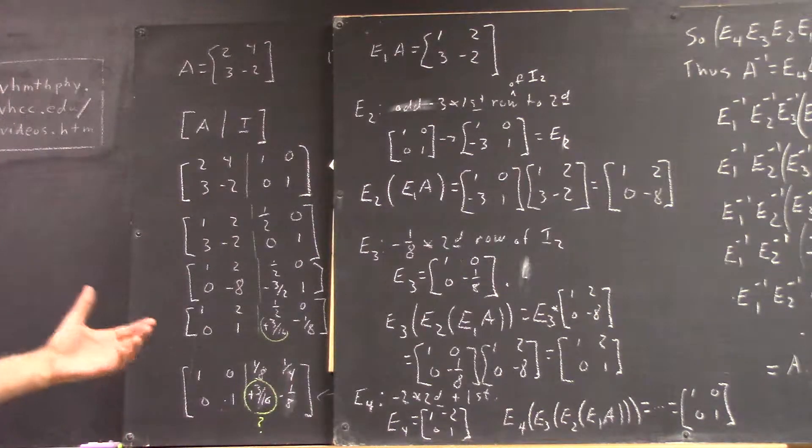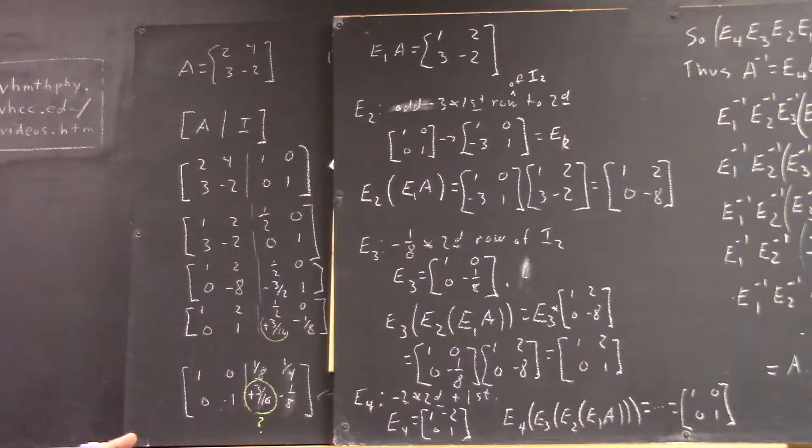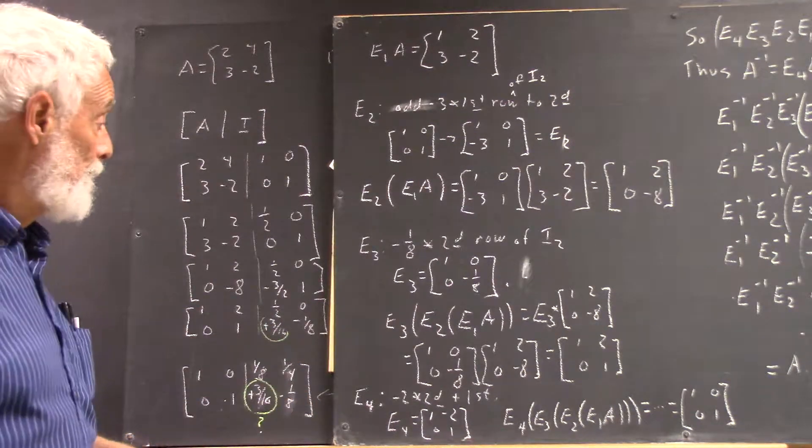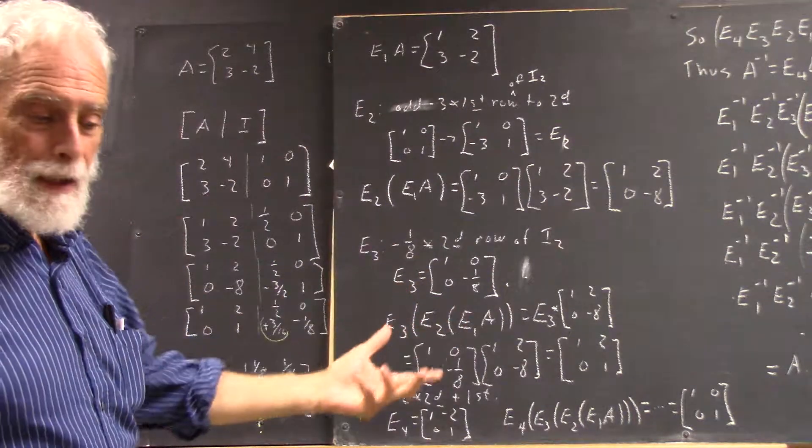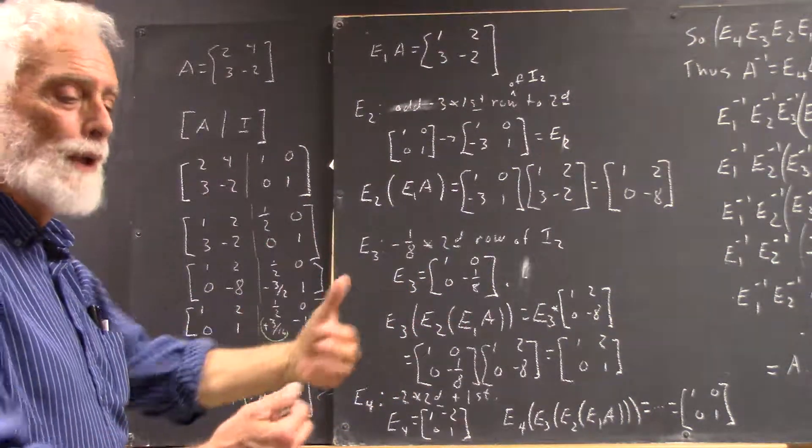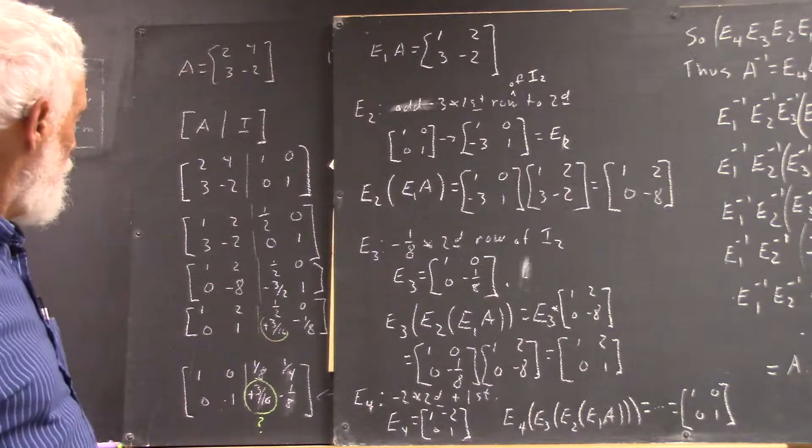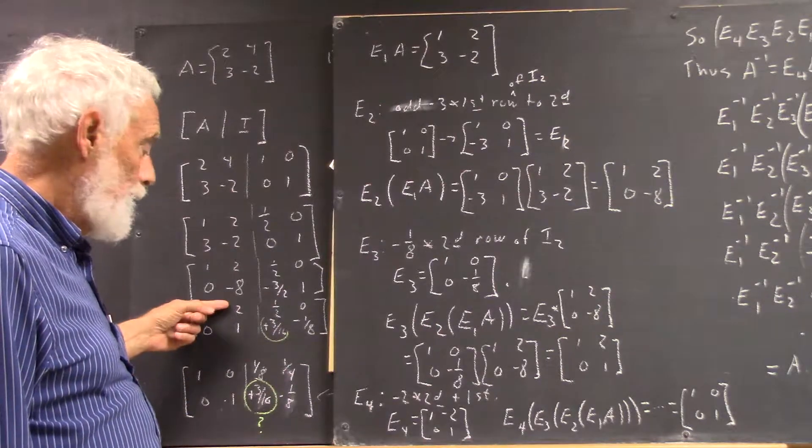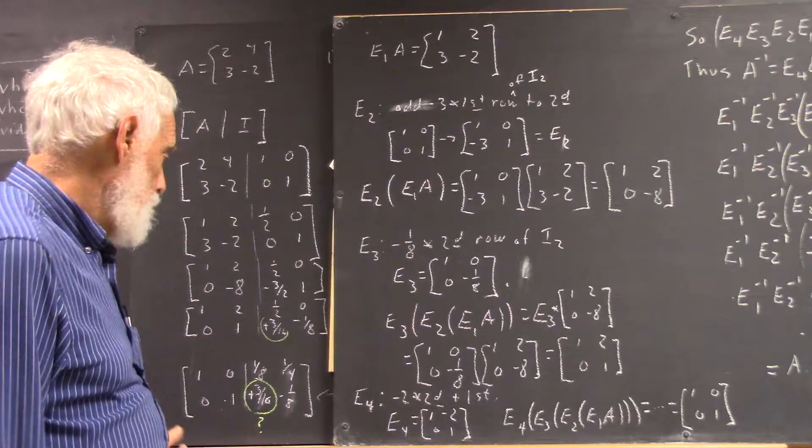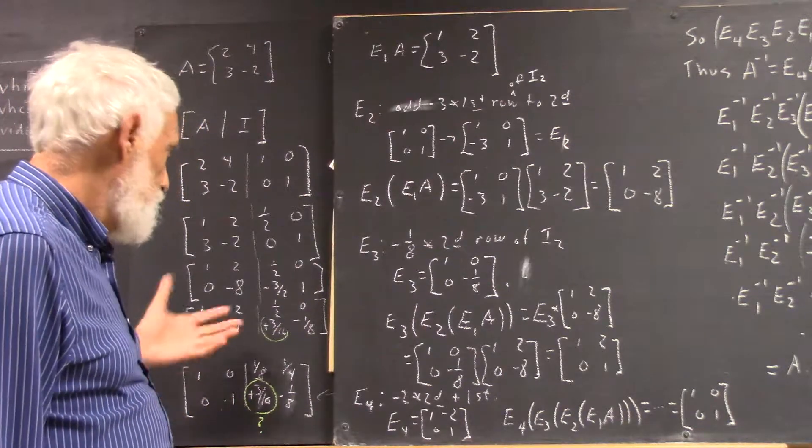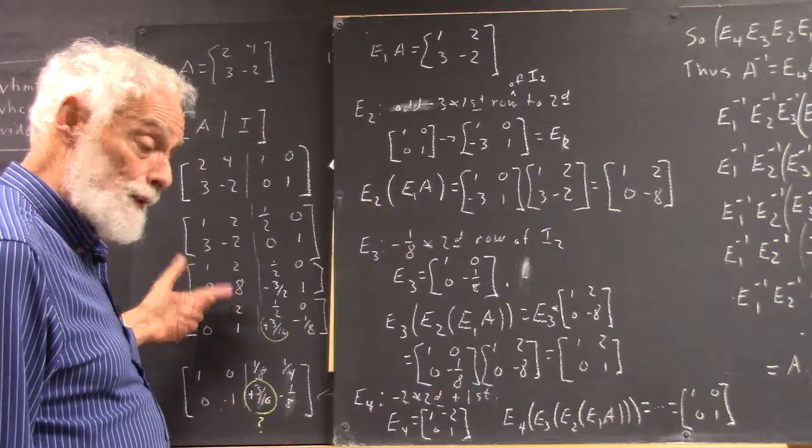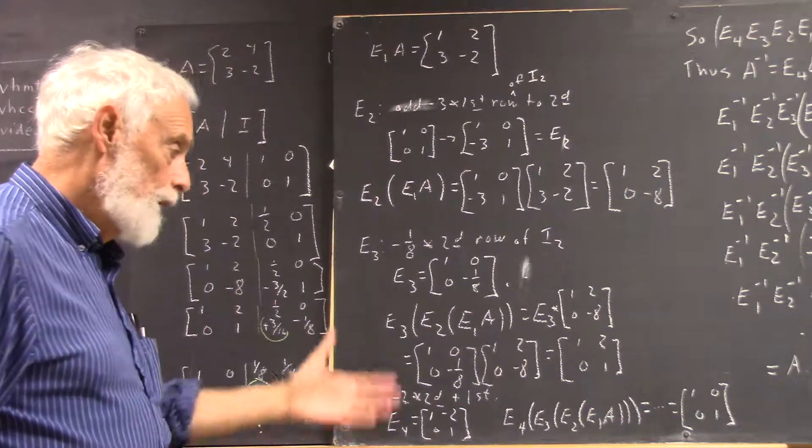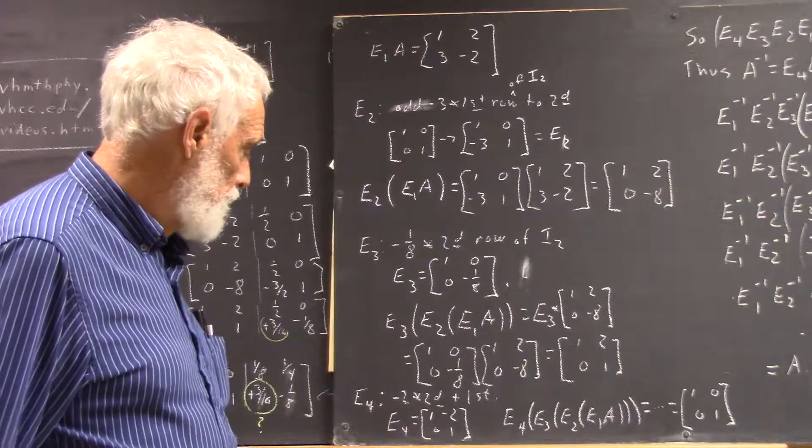So, we just keep doing whatever operation it takes to get the next step in reducing our matrix. We do that to the identity matrix and multiply by that matrix. Multiply our last result by that matrix. Our last step was to add negative one times this to this to get the zero. So, we add negative two times the second to the first on the identity matrix. And here's the matrix we get.